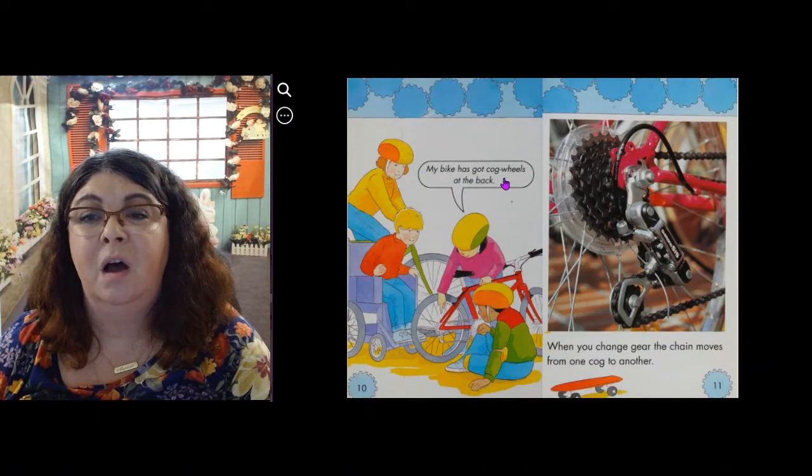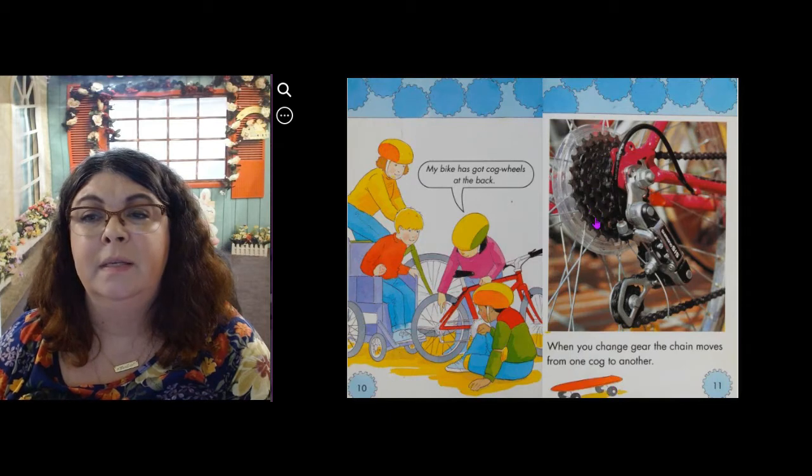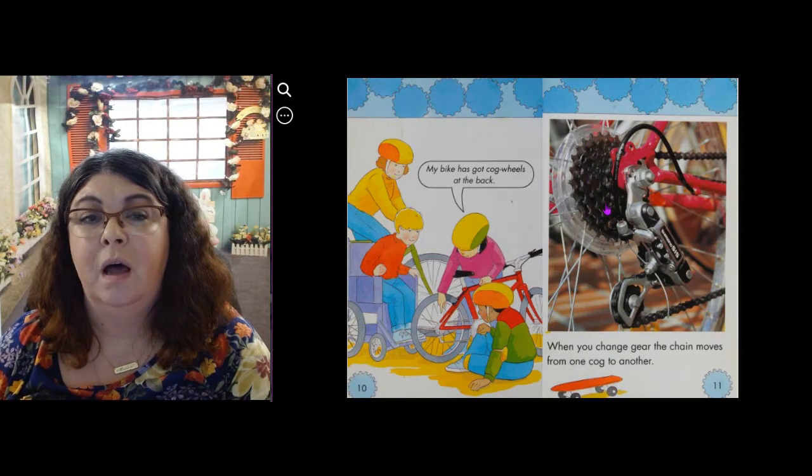My bike has got cog wheels at the back. When you change gear, the chain moves from one cog to another. These things here are called cog wheels.